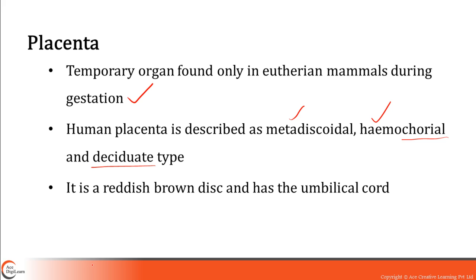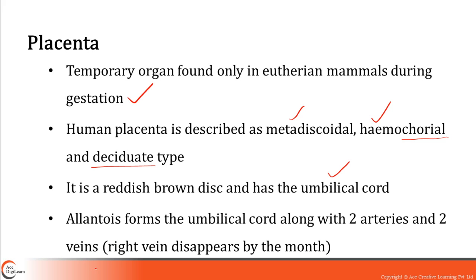The placenta is a reddish-brown disc with a very important structure. The umbilical cord comes from the allantois — placenta has a connection with the umbilical cord. Allantois forms the umbilical cord, and there are two arteries and two veins present inside the umbilical cord.